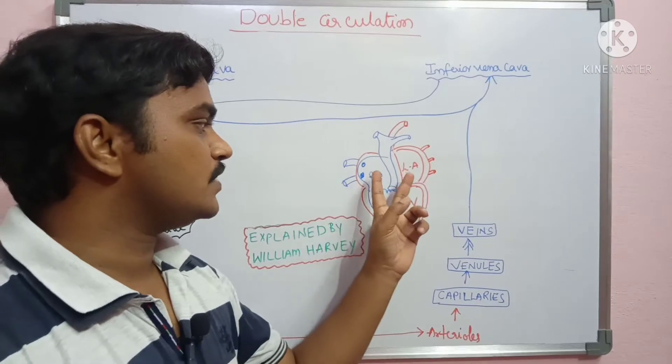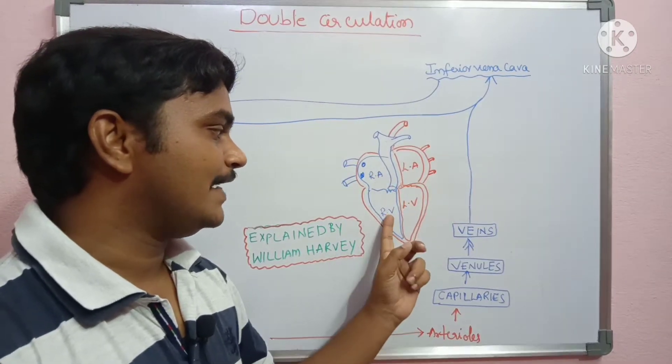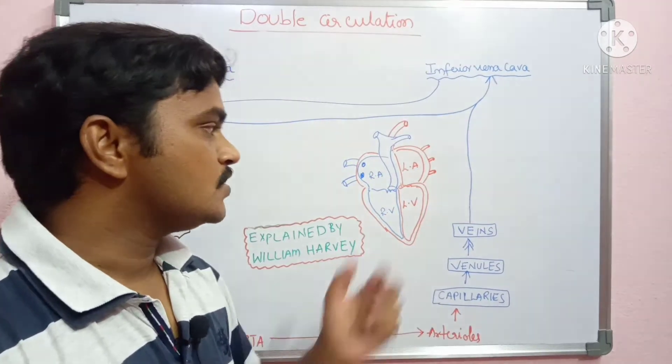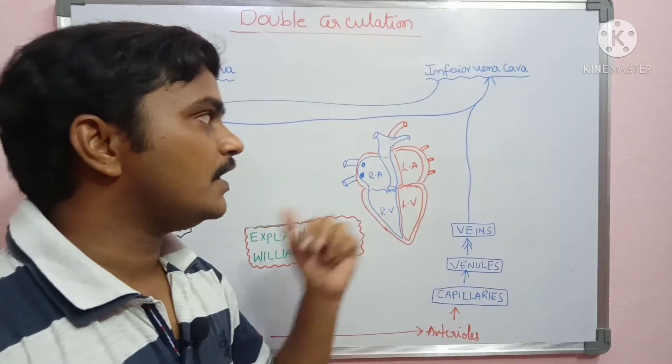So, we choose the right atrium, left atrium, right ventricle, and left ventricle. This particular heart has one and two chambers on each side.